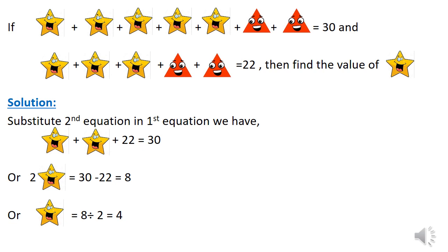We see that if we remove 2 stars from the first equation, the remaining equation is same as equation 2, that is 3 star plus 2 triangles. Now the 3 star plus 2 triangle is given equal to 22, so we put this value in equation 1.